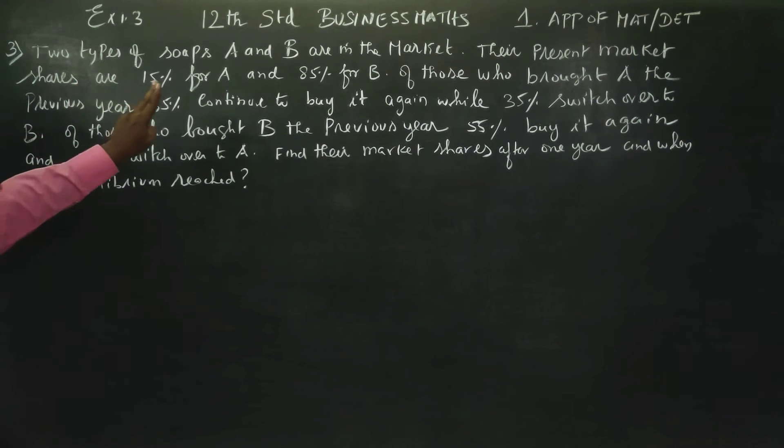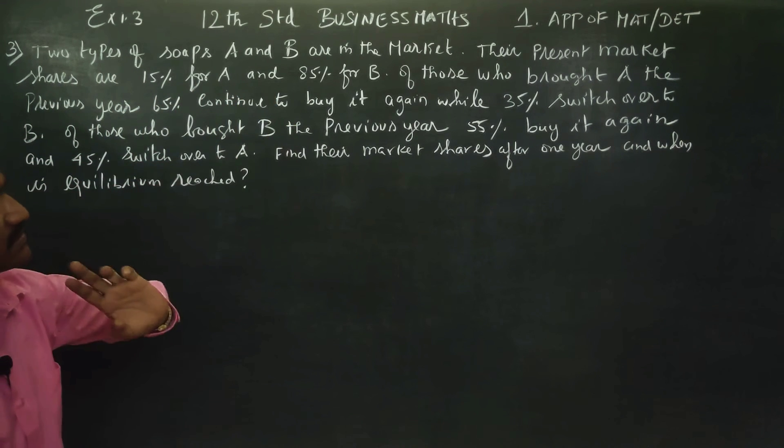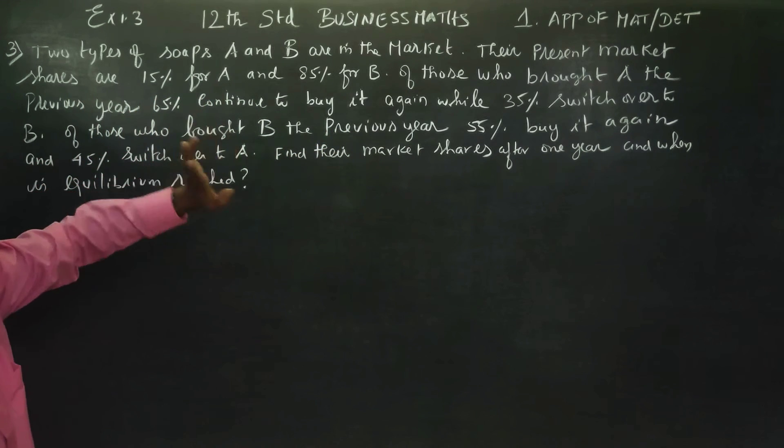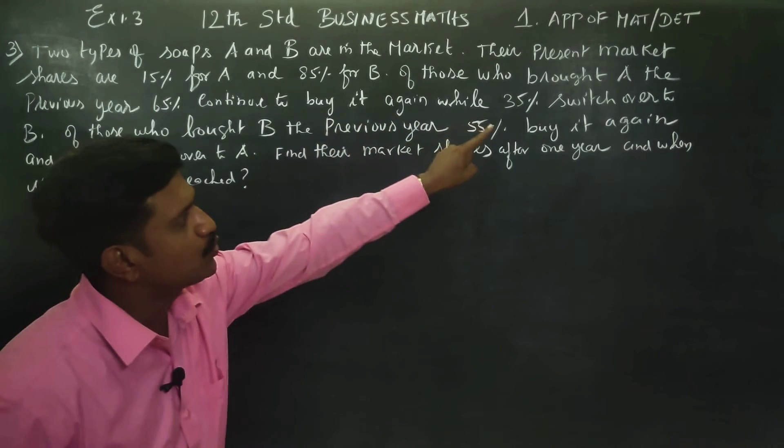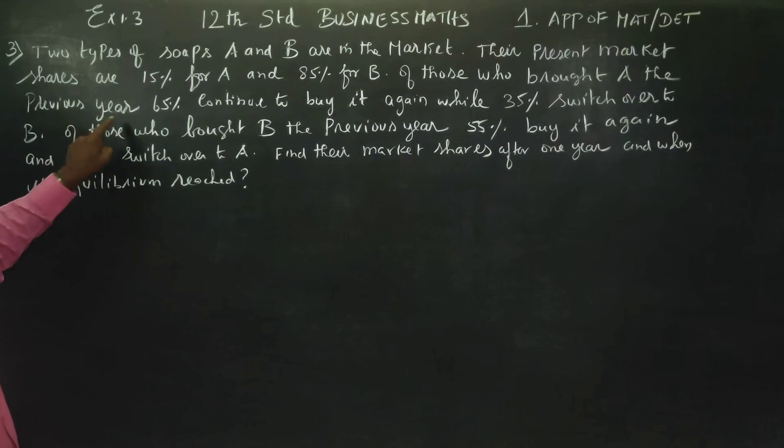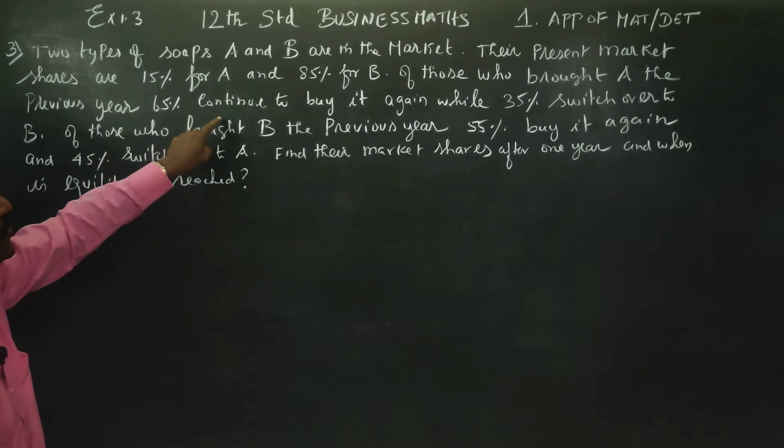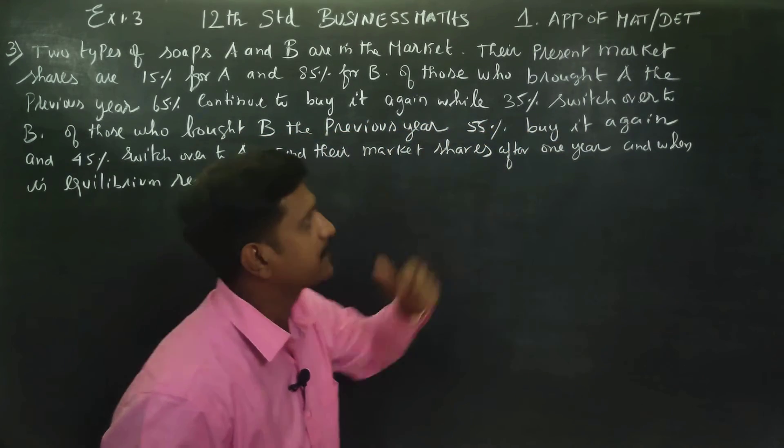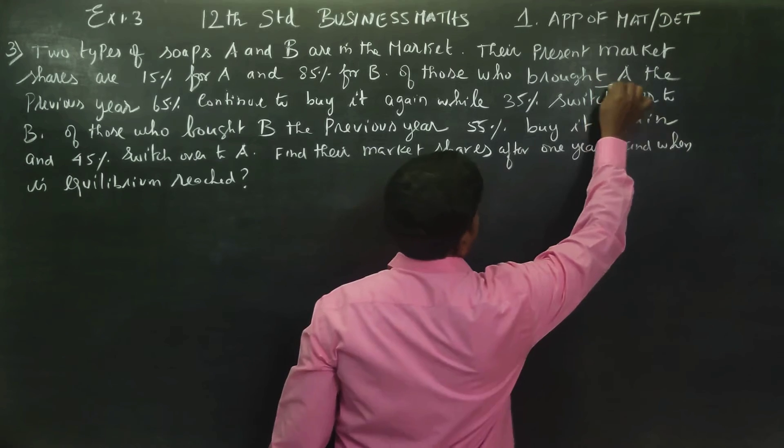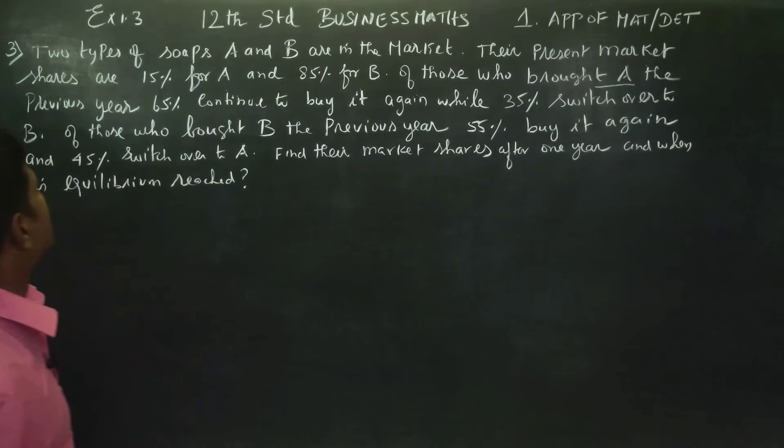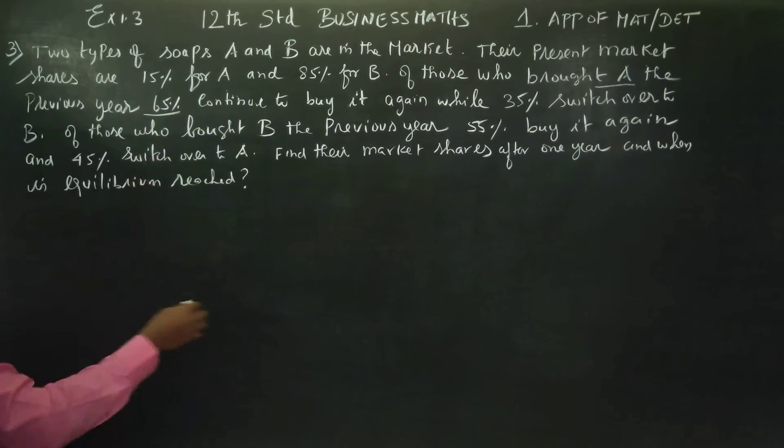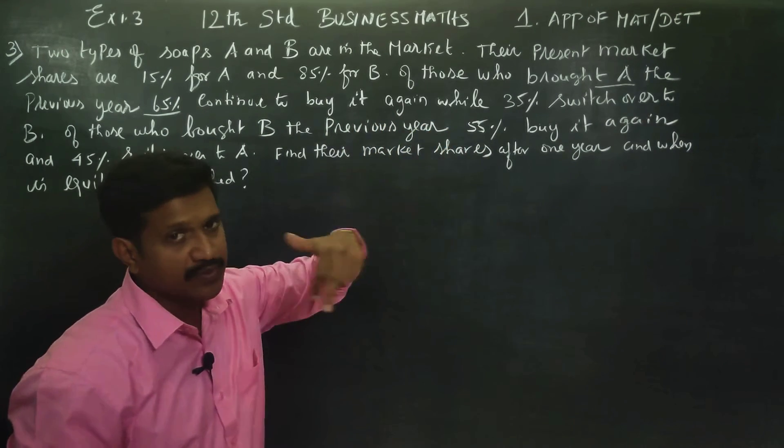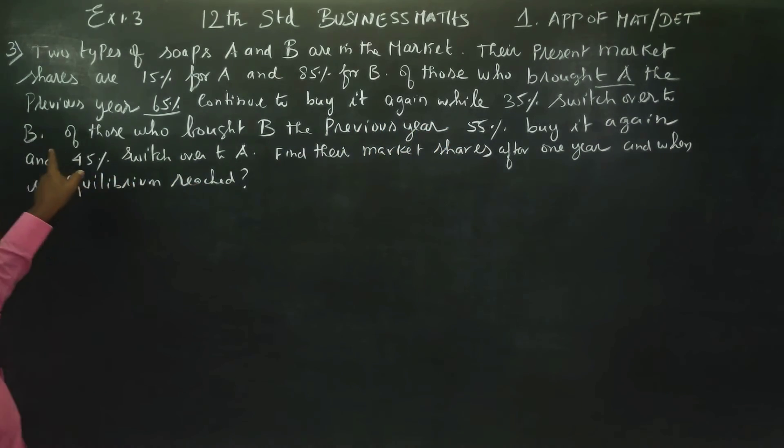Two types of soap A and B are in the market. There are present market shares. Of those who bought A the previous year, 65% continued to buy it again, while 35% switched over. Of those who bought B, 55% buy it again, and 45% switch over to A.